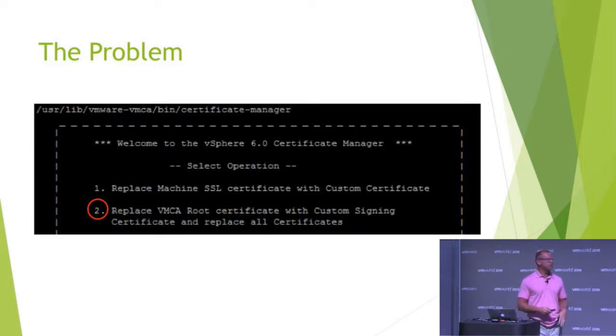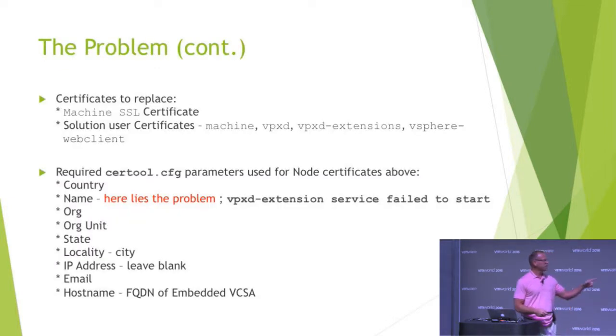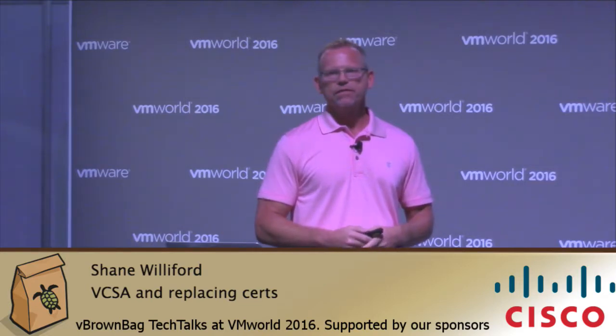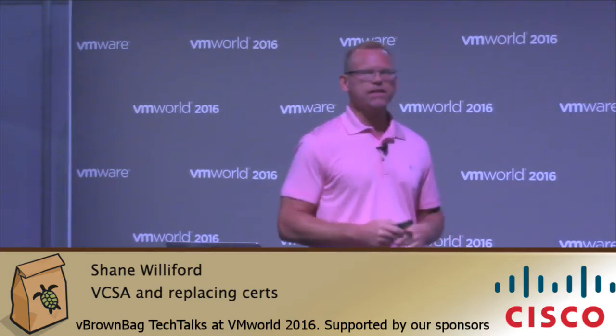And then the very last thing — what happens? See the item in red there. Next to the name parameter, the vpxd-extension service fails to start. So what happens? That's actually it — the name parameter. Several blog posts that I've read, and nothing definitive in any of the KBs or the security guide or the user guides, said that you need to change the name parameter. And actually, if you remember back in vSphere 5 days using OpenSSL, you kind of had to have a different name for each of the services that you replaced your cert with. I believe that is exactly the same thing that happened here.